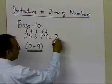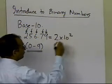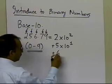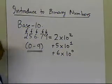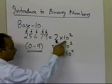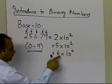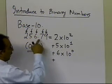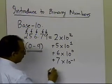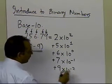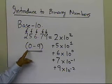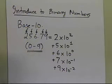So if I was going to write this, I would write it like: 2 times 10 to the power 2, plus 5 times 10 to the power 1, plus 6 times 10 to the power 0 — that gives you 256. Then after the decimal point, you get 7 times 10 to the power minus 1, plus 9 times 10 to the power minus 2. So each digit has a place, and decimal numbers use digits 0 through 9.